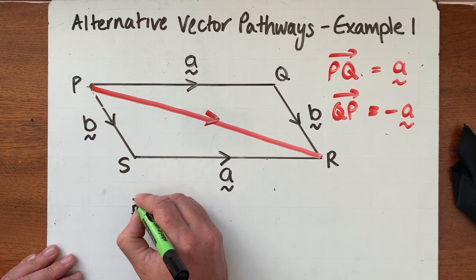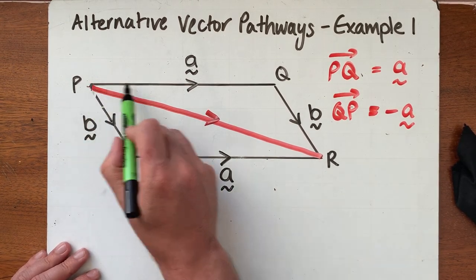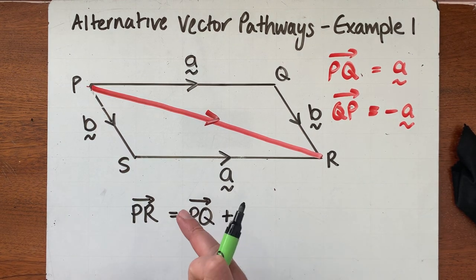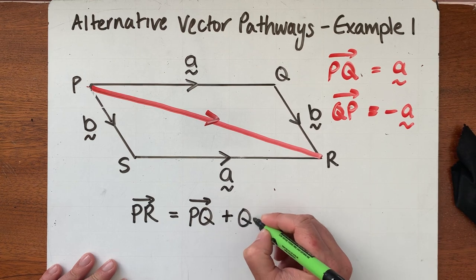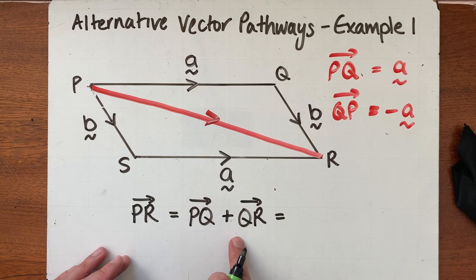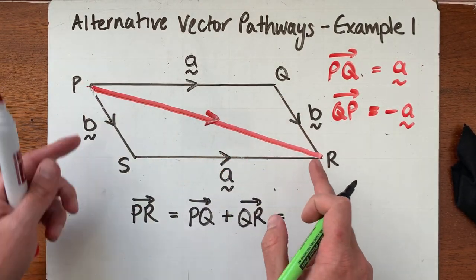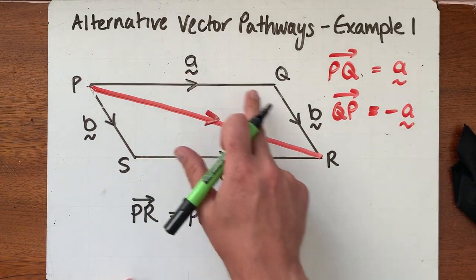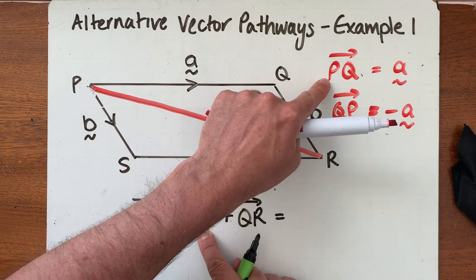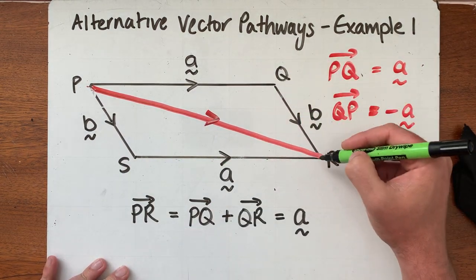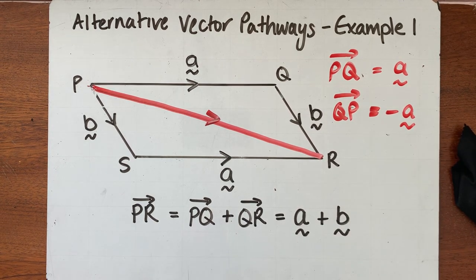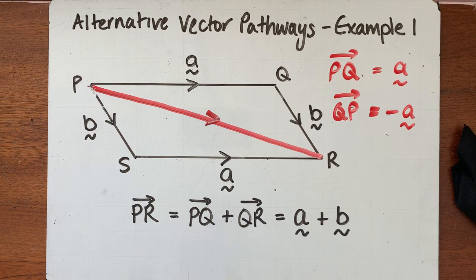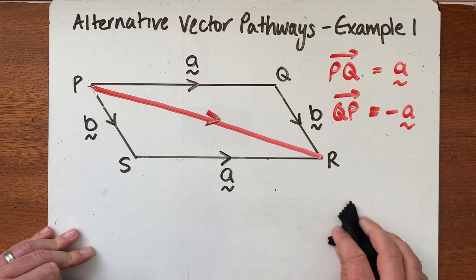I'm going to go with the most obvious one. If I want to go from P to R, I could go from P to Q first, and then from Q to R — that gets me there. To get from P to R, I go from P to Q and then Q to R, ending up at R. We tend to use lowercase letters, so PQ is called 'a', and going from Q to R is vector 'b'. So the alternative vector pathway from P to R is to go along a and then along b.